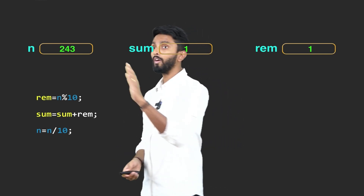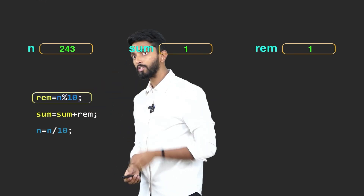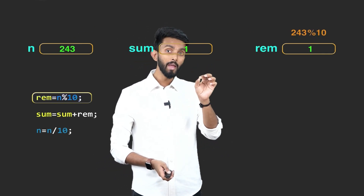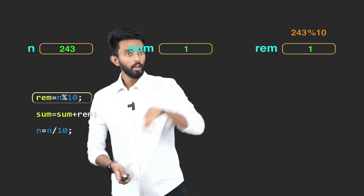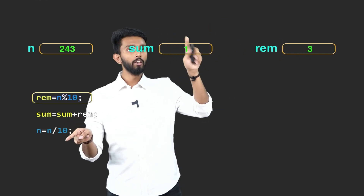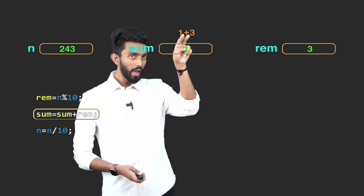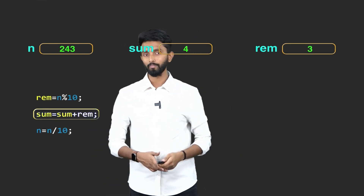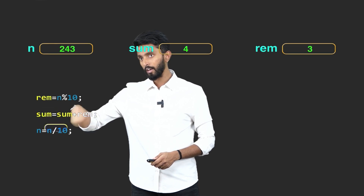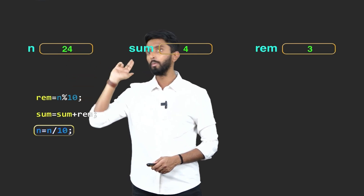Now I should again find the last digit. n is now 243. 243 modulo 10 gives remainder 3. Take that 3, give it to remainder. Then take this 3 and update sum: 3 plus 1 is 4, and that 4 I give to sum. Sum value gets updated — sum is 4. Next, remove 3 from n: 243 divided by 10, the quotient is 24, and that is what I give to n. n becomes 24.